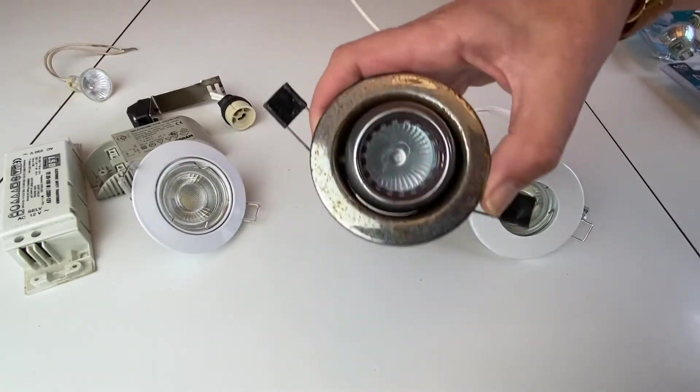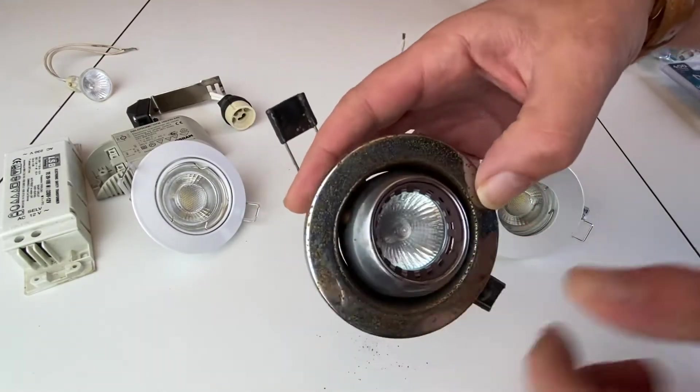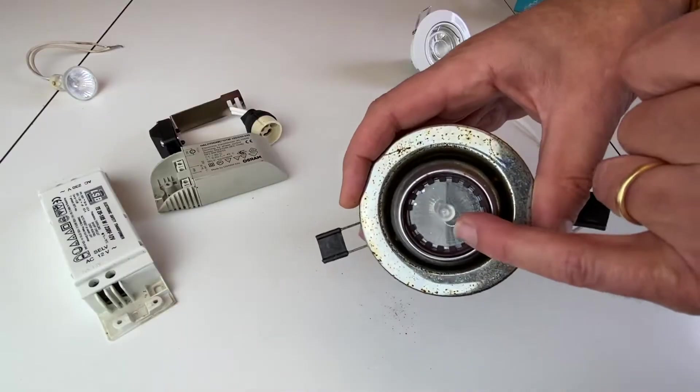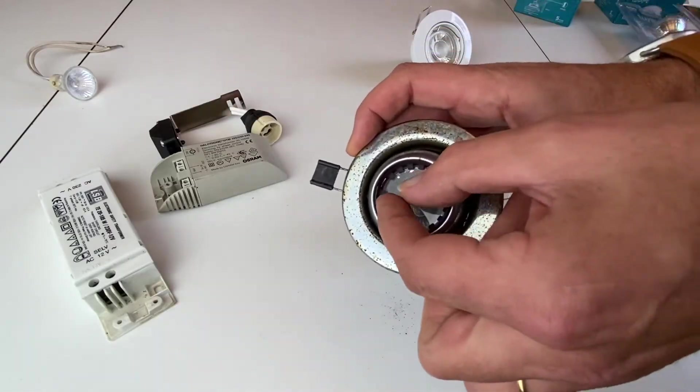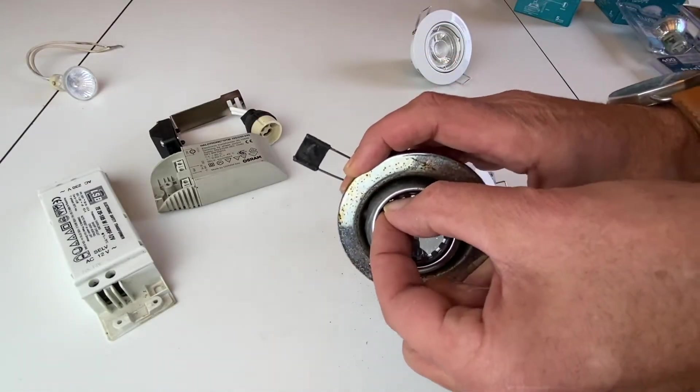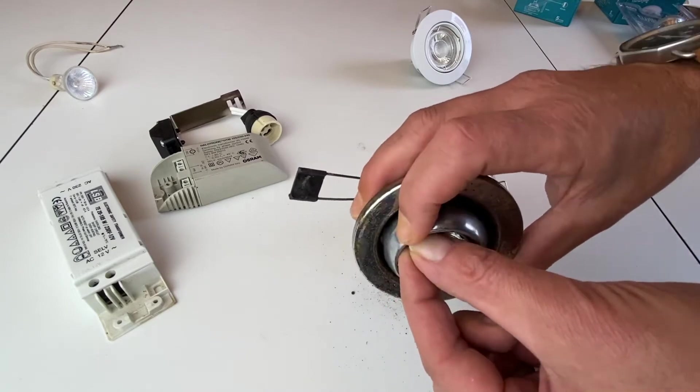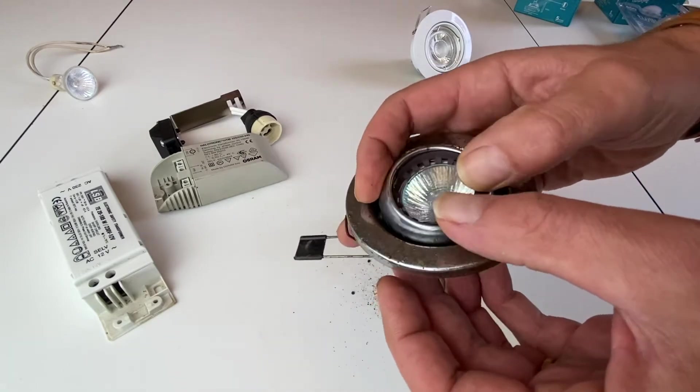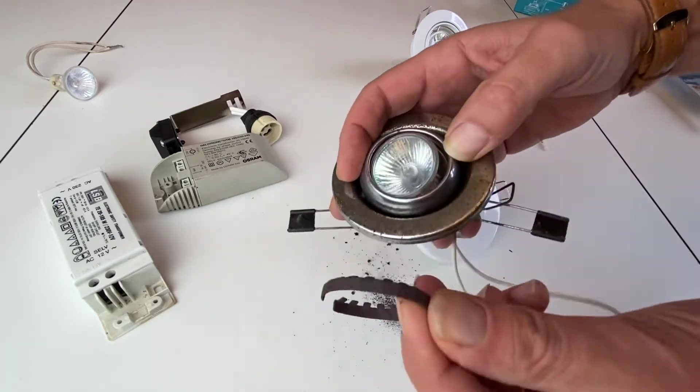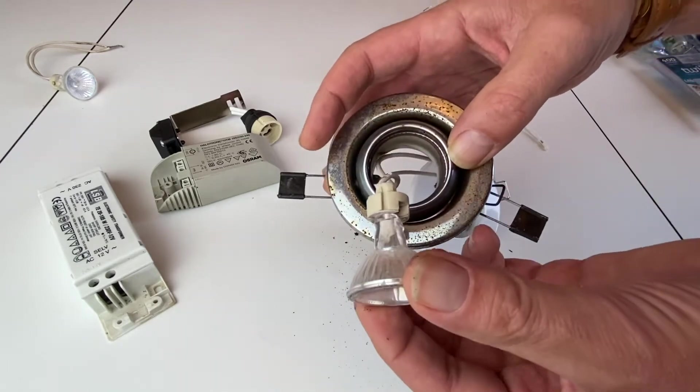On this more ancient model, it's the same approach but it's looking differently. So here it's the same, take out the ring. Just remove this ring and this will release the bulb.